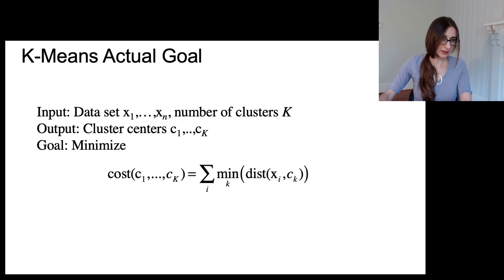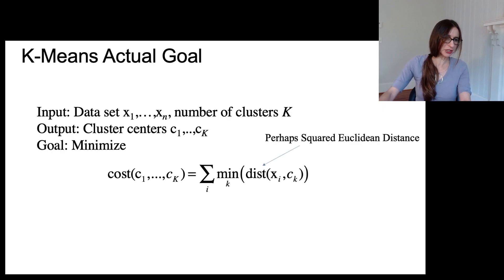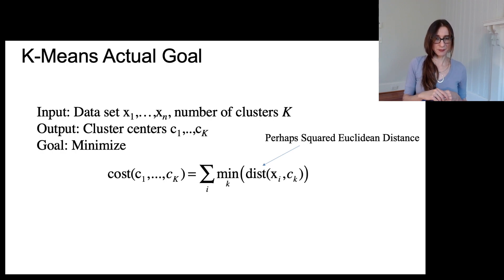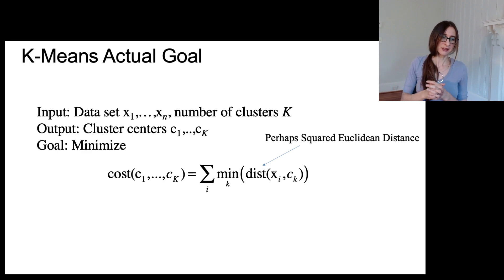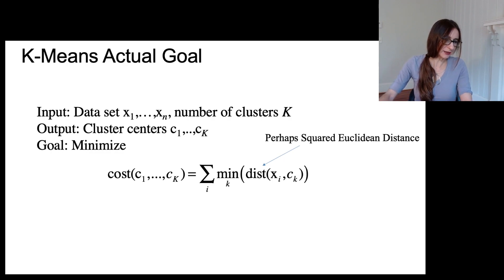That is the cost that k-means is minimizing, but k-means can't actually optimize this whole thing directly — it's very difficult. In terms of distance metric, we usually use the squared Euclidean distance. K-means is most often used when clusters are roughly Gaussian, so Euclidean distance is usually a good choice, but the choice of distance metric really does matter in terms of the solution.